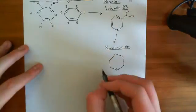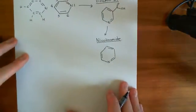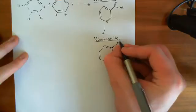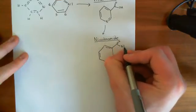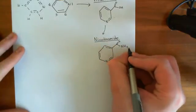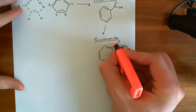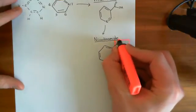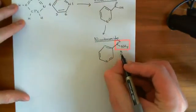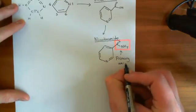Here's the six-membered ring with the double bonds, and then off here, instead of having a normal carboxylic acid group, you now have a primary amide group. You still have the carbonyl group, but instead of the alcohol group, you have an amino group. This group circled in red is the primary amide group. This whole structure is nicotinamide.